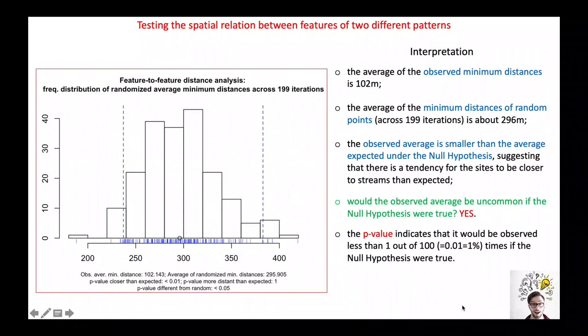How can we interpret the test result? The average of the observed minimum distances is smaller than the average of the randomized minimum distances. This indicates that the observed sites tend to be closer to water streams than randomly generated locations. Will this pattern be unusual if the null hypothesis were true? Since the observed average minimum distance falls in the lower tail of the distribution, the answer is yes, it would be unusual. The p-value indicates that it would be observed less than one time out of 1,000.